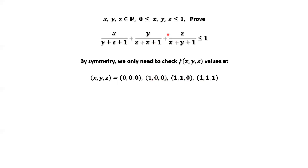If we plug in these values, we will have the same result. Now by checking: if we replace x, y, z by zero, zero, zero, then the left-hand side is zero. If we replace x, y, z by one, one, one, we will have one-third plus one-third plus one-third, which is one.